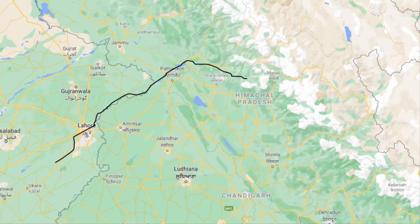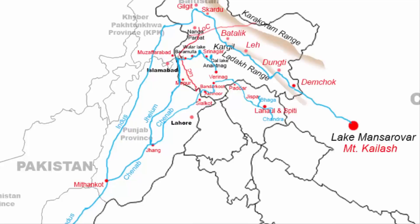The dam is going to be built on river Uj, which is a tributary of river Ravi. River Ravi originates from the Himalayan mountains in the Bara Bengal region in Chamba district of Himachal Pradesh. It flows northwest through Chamba district, then turns southwest and enters the northern part of Punjab in the Pathankot district, where it becomes the source of the Ranjit Sagar Dam Lake.